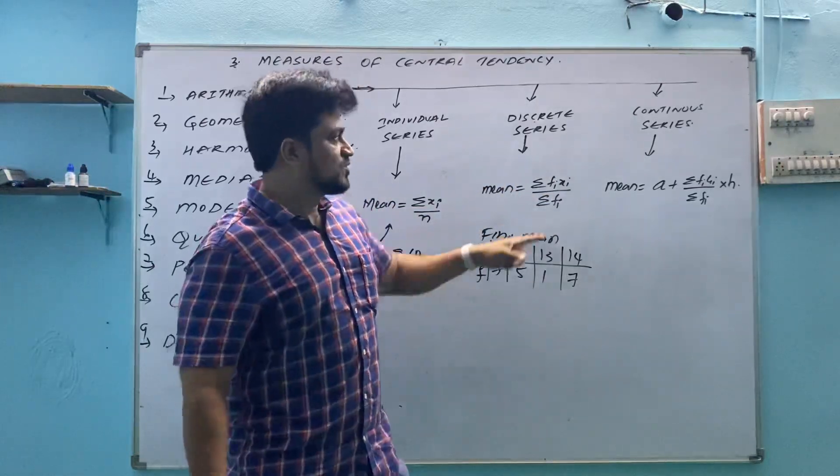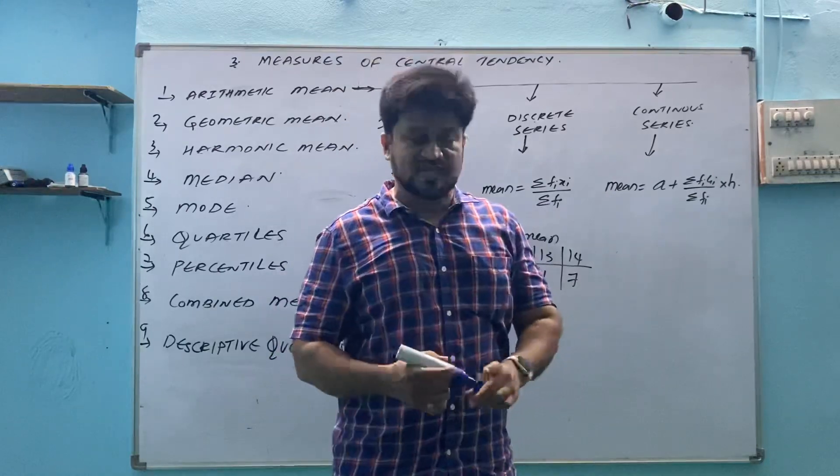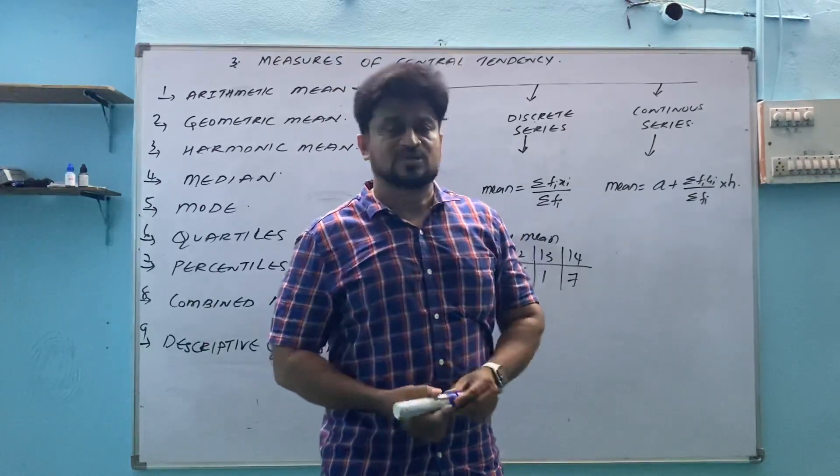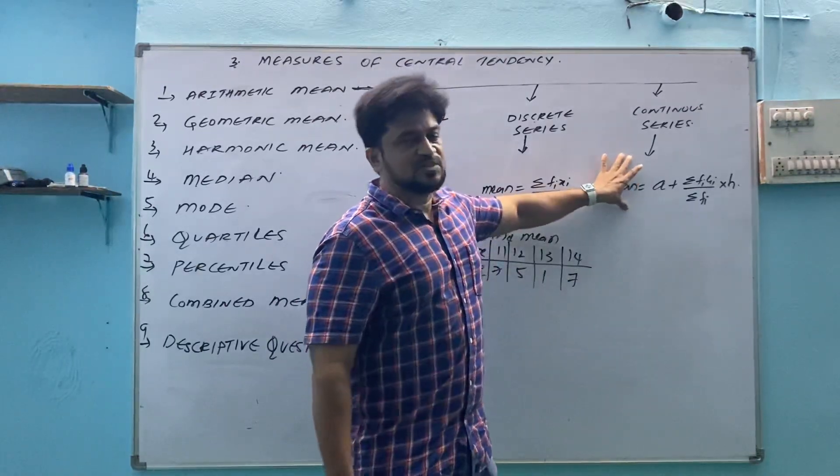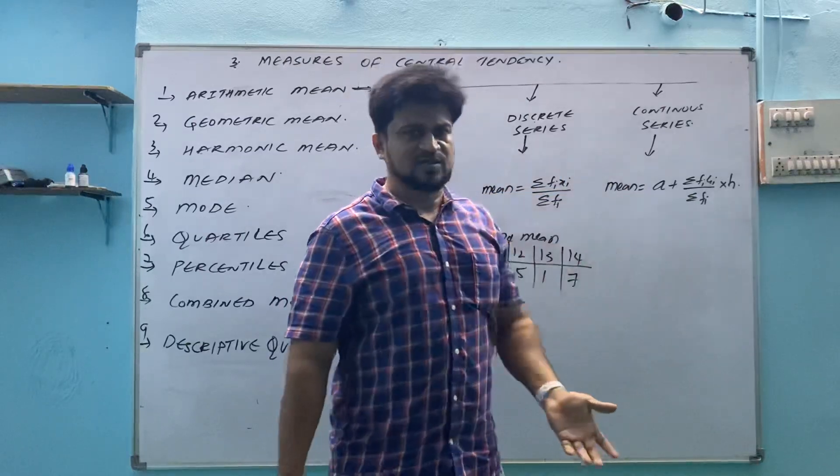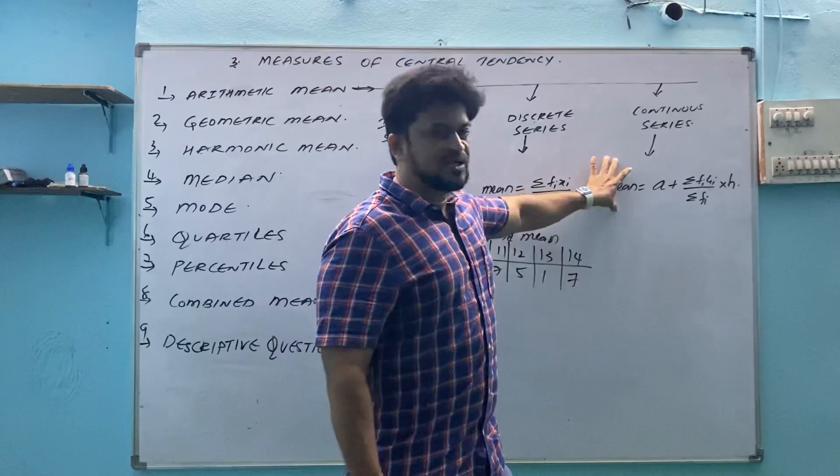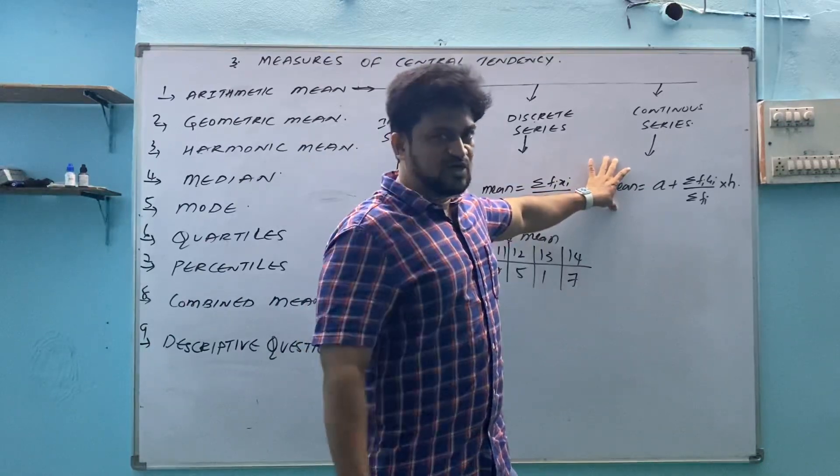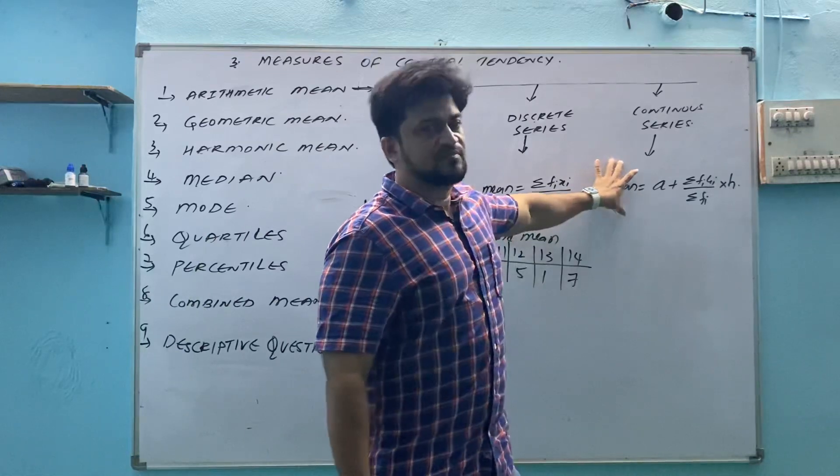Now in continuous series, in continuous series we have many formulas: direct method, assume mean method, step deviation method. Many methods are there. This one is step deviation method, maximum used formula. We have three different methods. So we can go through with all the three methods, or else if you know this method, you can also do the remaining two methods by seeing the examples also. So we will discuss this method.